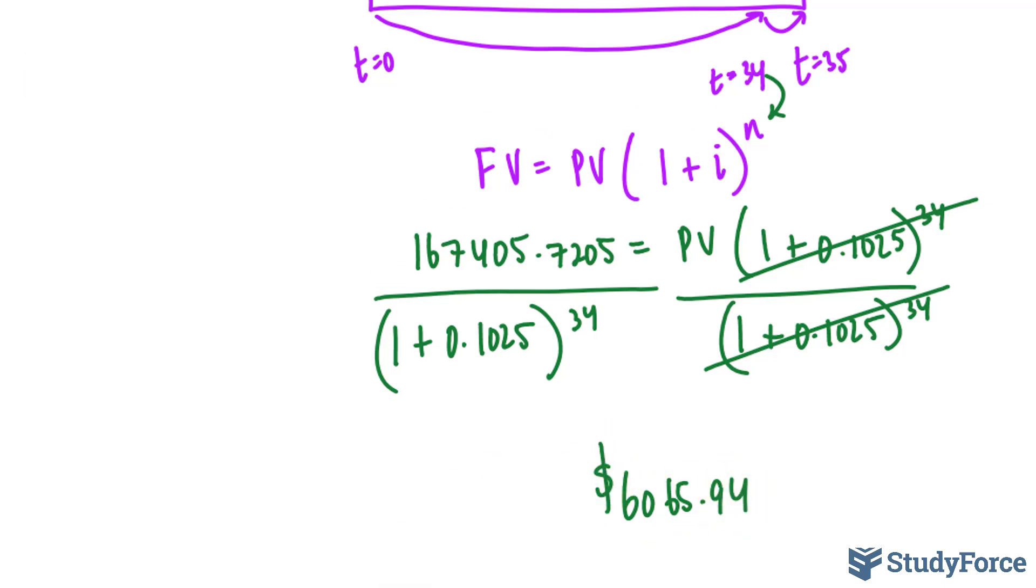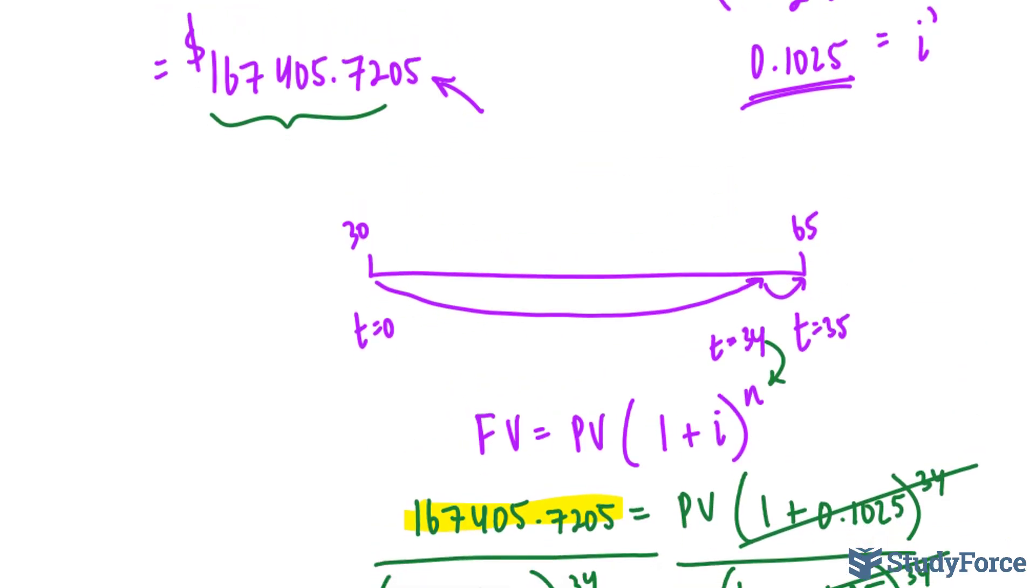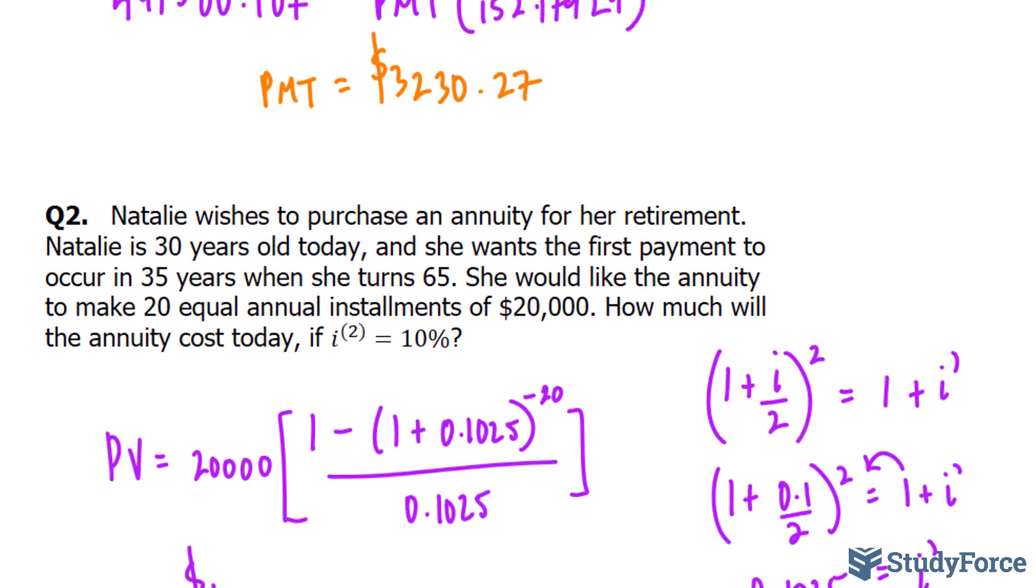Let's interpret this. Natalie has to put in this amount today on her 30th birthday, which will grow in the next 34 years to the amount shown here. Once she turns 64, this small amount will have reached that amount of which a year later she can start to purchase her annuity, which will give her 20 equal payments of $20,000.